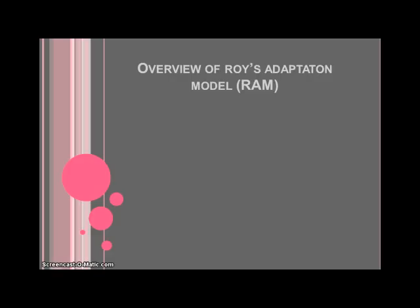Now that we have a case model to compare to, let's look at an overview of Roy's adaptation model, also known as RAM. The first thing is to assess behavior. We are using a systematic approach here to patient care. Roy proposes that behavior is our response or reaction to a stimuli. This behavior is going to be either adaptive and healthy, or non-adaptive and ineffective. The response is not passive, but rather depends on a person's coping mechanisms, which are both cognitive and psychological processes.